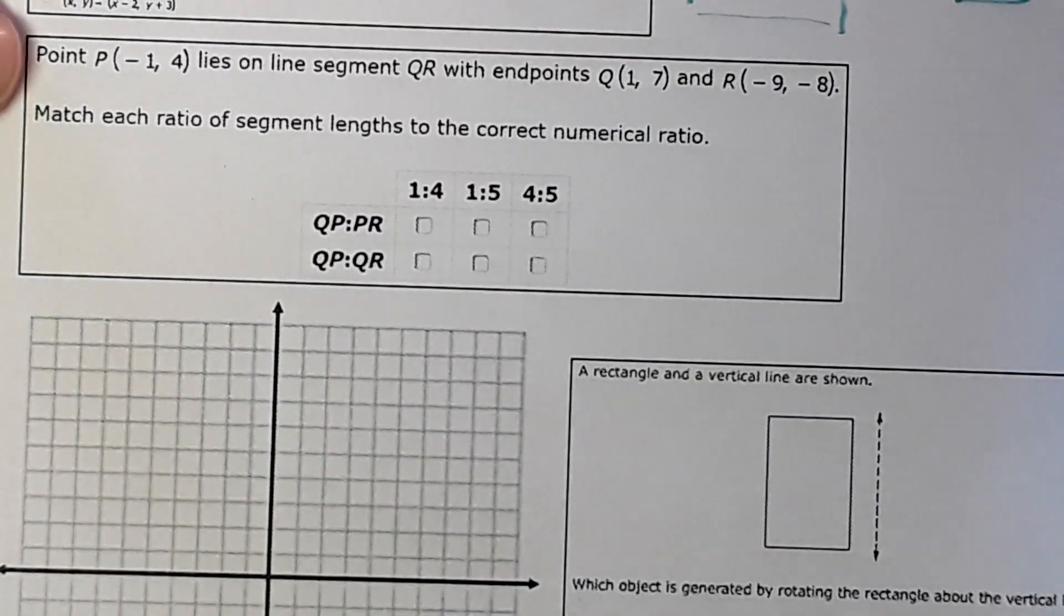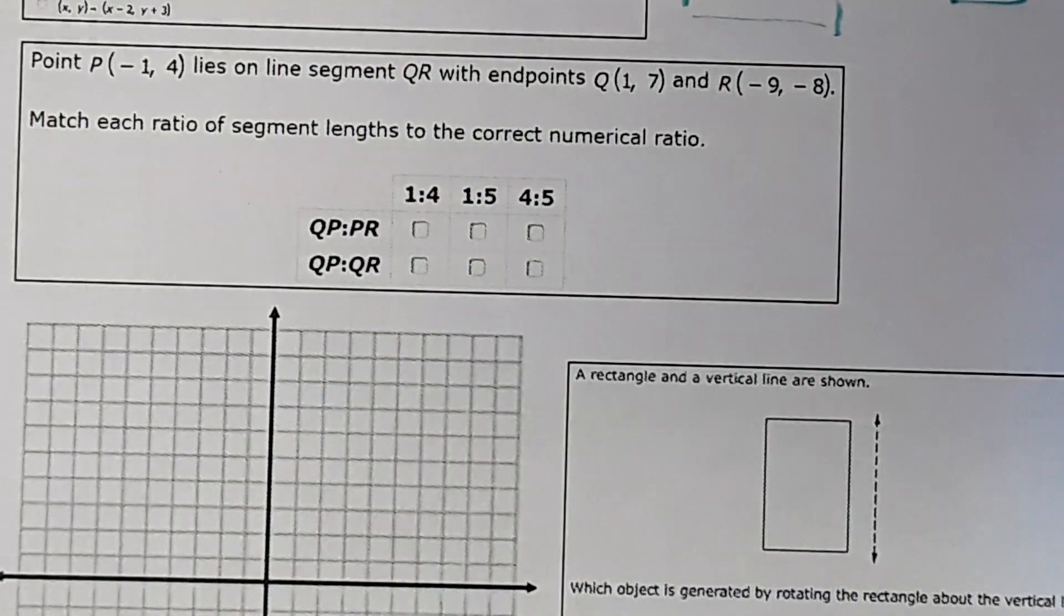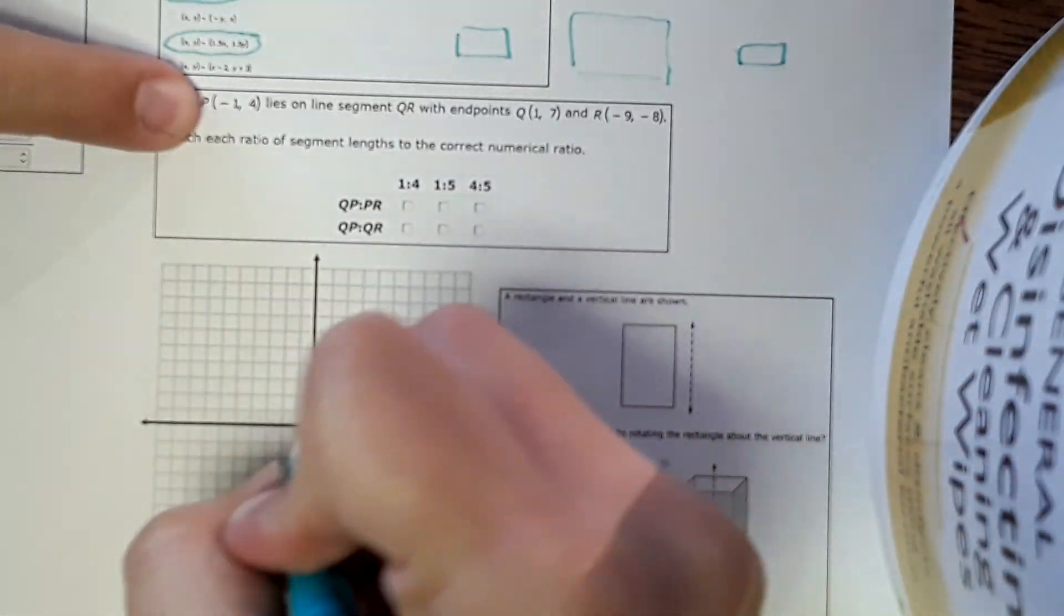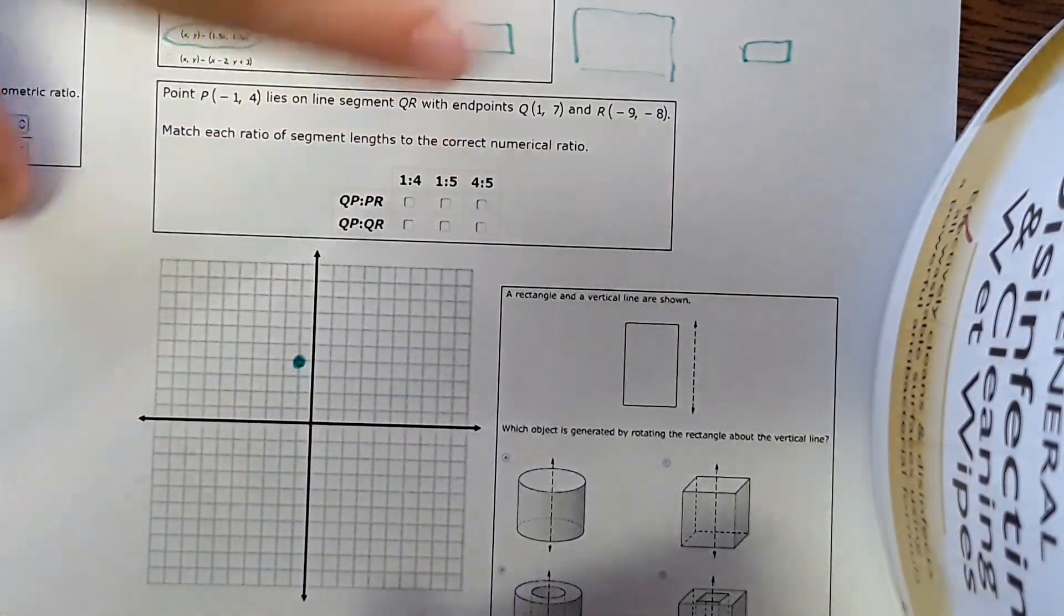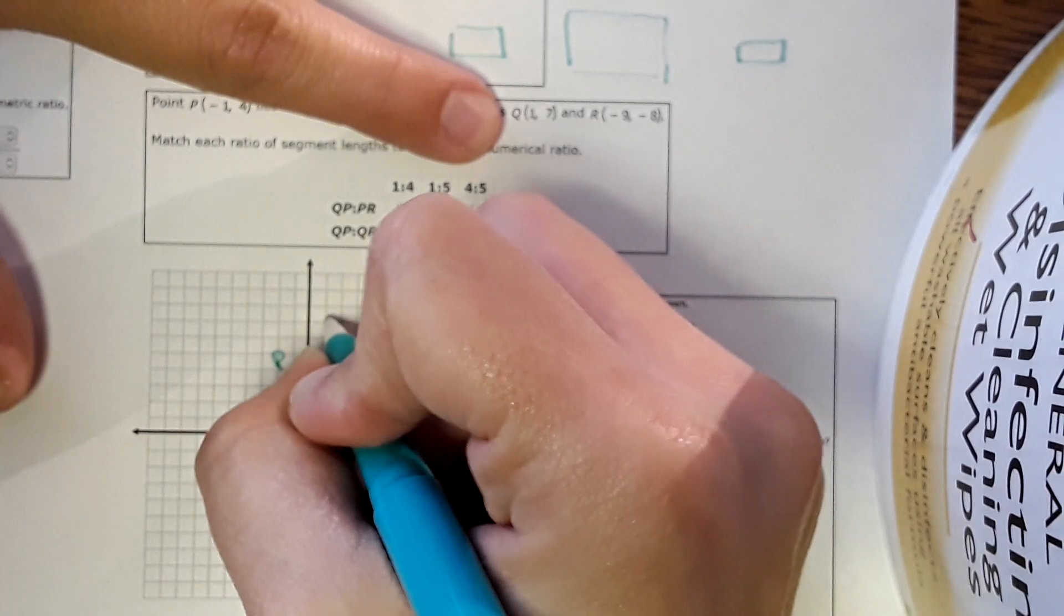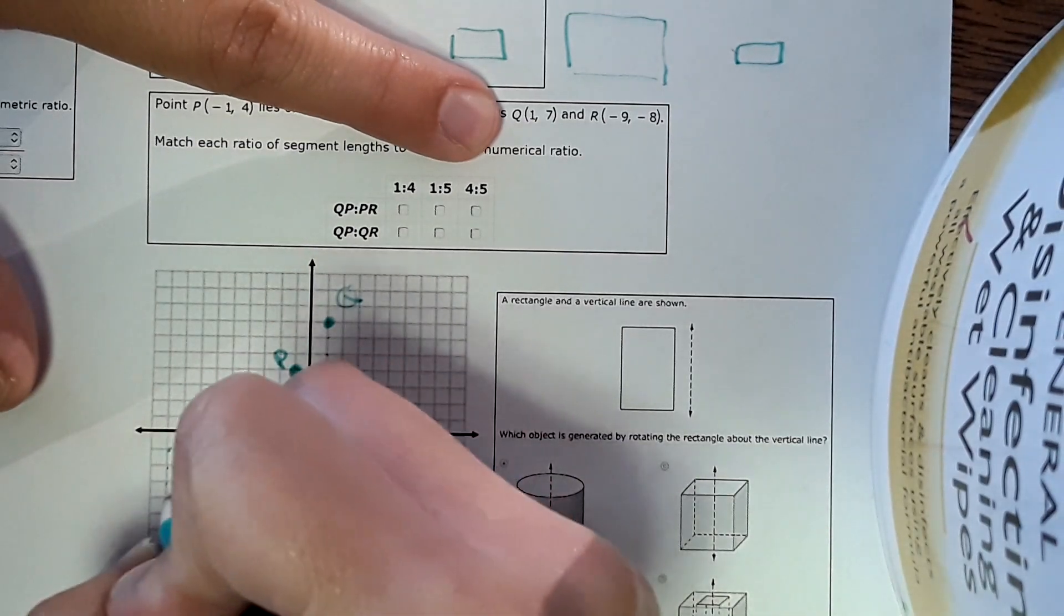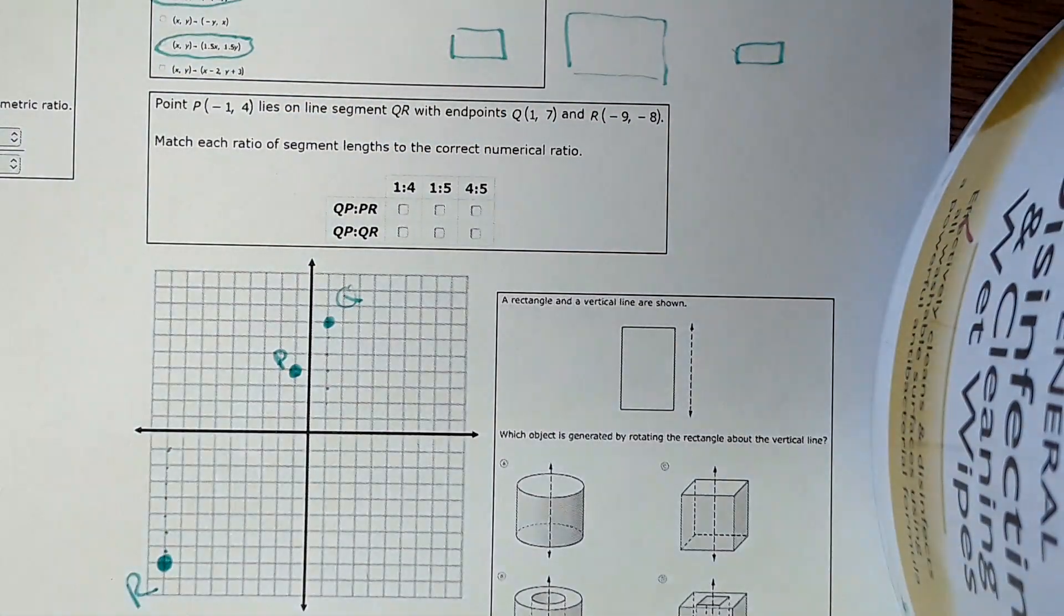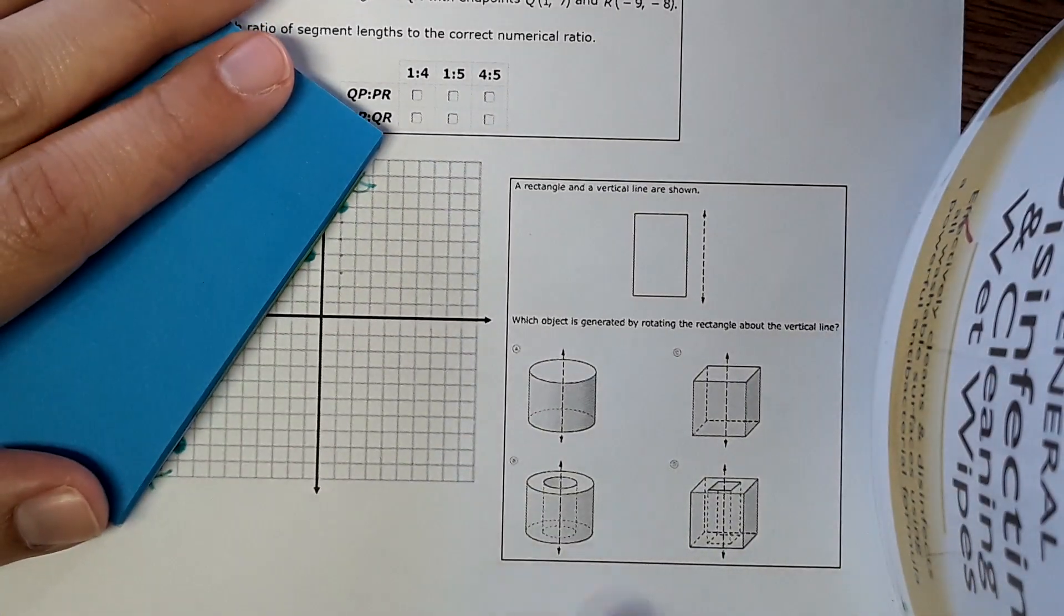Point P. Negative 1, 4 lies on segment QR with these endpoints. Match each ratio of segment lengths to the correct numerical ratio. Okay, let me go over this one. It says point P is at negative 1, 4. 1, 2, 3, 4. Lies on line segment QR, and it gives us QR. Okay, so this is point P. Q is at 1, 7. And R is at negative 9, negative 8. Okay. By the way, they won't give you the graph. You'll have to just write this out on the graph paper.